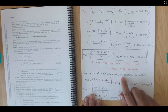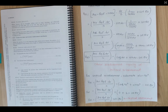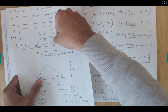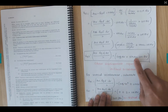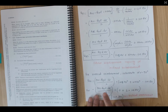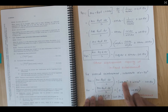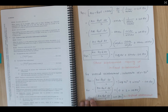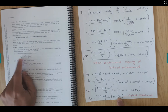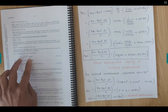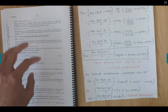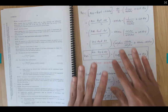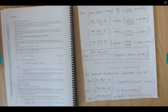For vertical reinforcement, we substitute αv equal to 90 degrees. Since cos 90° = 0 and sin 90° = 1, the equation simplifies to Vus = (Asv/s) × fsy.f × dv × cot θv. This is the equation we use most commonly in calculations for vertical stirrups. That completes the proof of these two equations from the Australian Standard. Thank you.